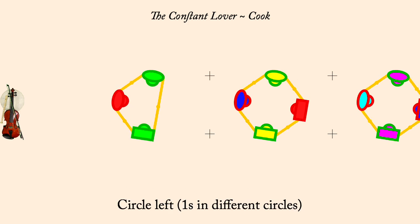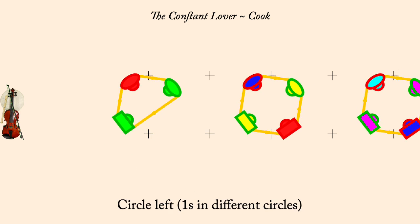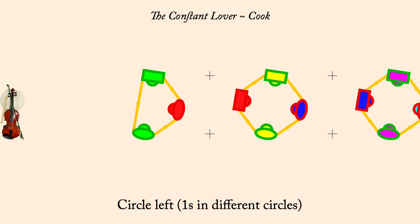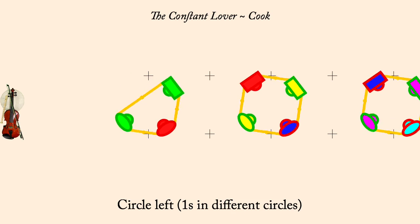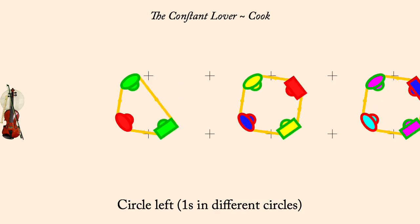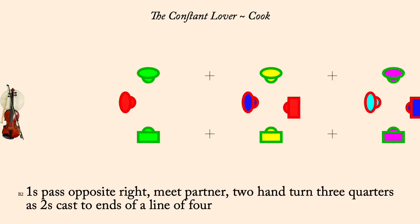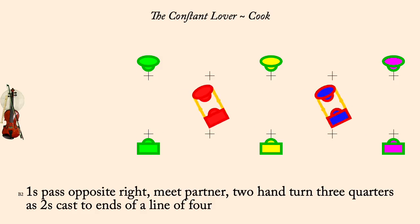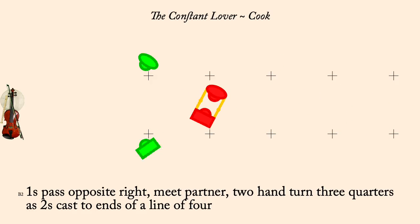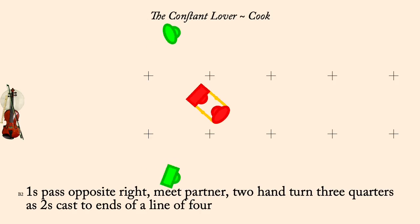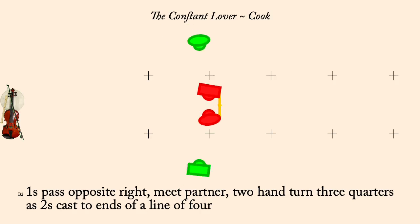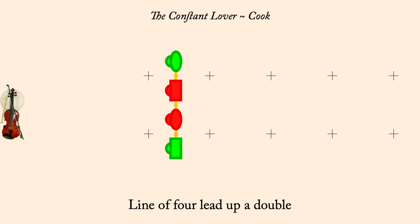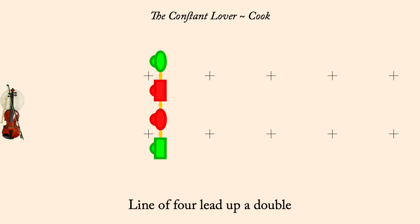Circle left. One's pass opposite right, partner two-hand turn three-quarters as twos cast to a line. Line of four, up a double. One's cast down, twos assist.